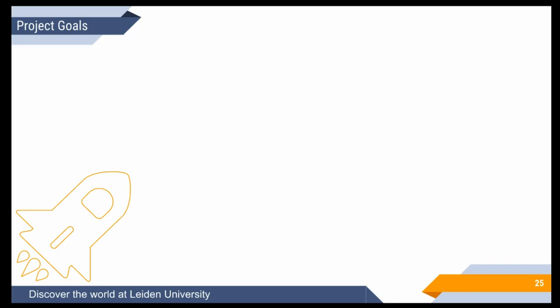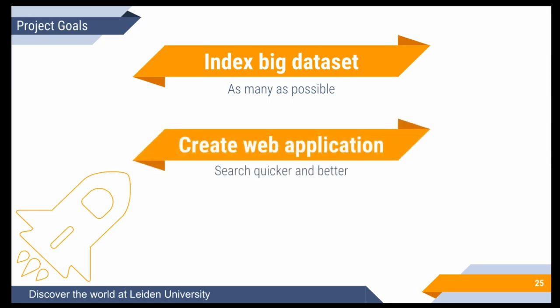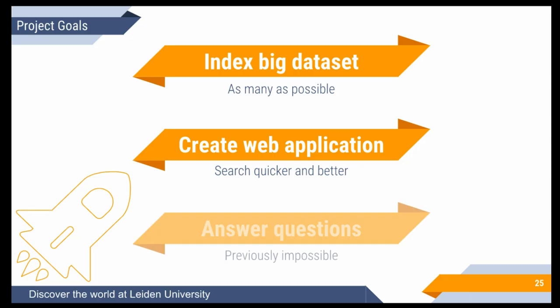At the moment I'm focused on increasing the accuracy of the named entity recognition, but the overall project goals are to index a big dataset — as many documents as possible from as many sources as I can — and then create an intuitive web application that makes searching quicker and better. I have ideas around searching on maps and plotting timelines, and hopefully this will make it possible to answer research questions that were previously almost impossible to solve.